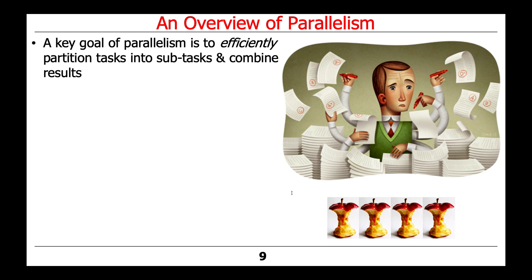The key goal of parallelism is to efficiently partition the tasks into subtasks and efficiently combine the results back together again. That key word — efficiency — is really important, because it turns out that in some cases, depending on what you're doing, it's inefficient to split certain data structures, and it's inefficient to join or combine certain data structures. And so as a result, parallelism is not always a win.